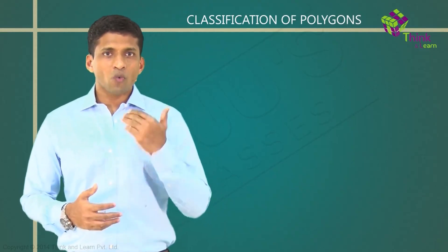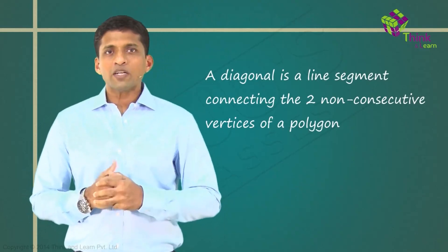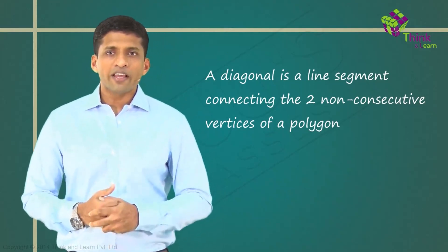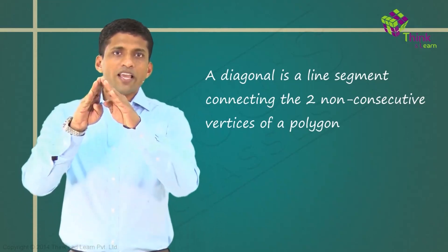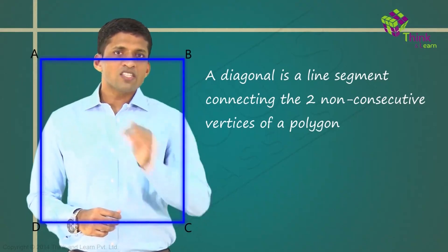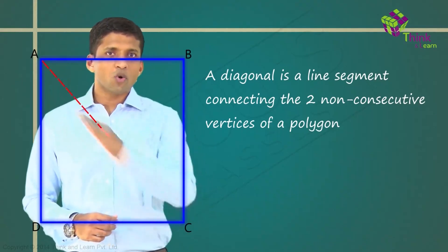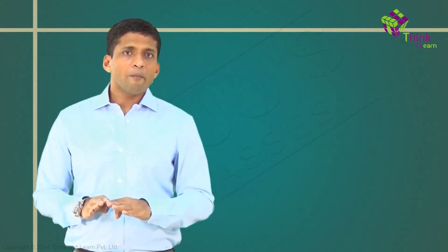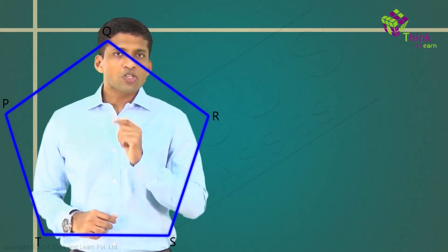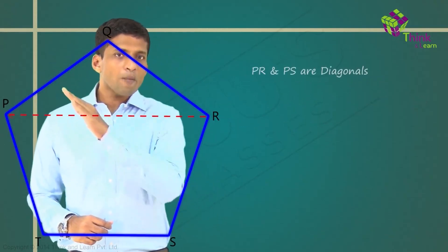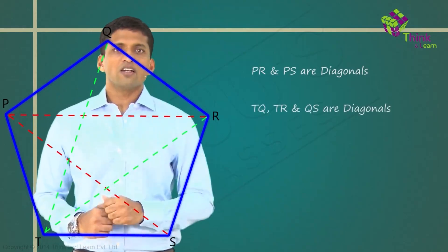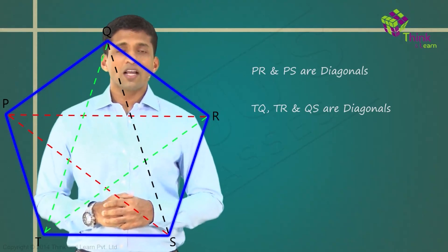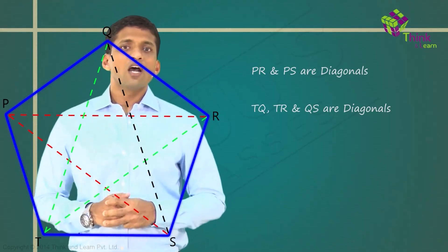A diagonal is a line segment connecting the two non-consecutive vertices of a polygon. In quadrilateral ABCD, A and C are non-consecutive, so AC is a diagonal; B and D are non-consecutive, so BD is a diagonal. In pentagon PQRST, the diagonals formed by joining non-consecutive vertices are PR, PS, TQ, TR, and QS.